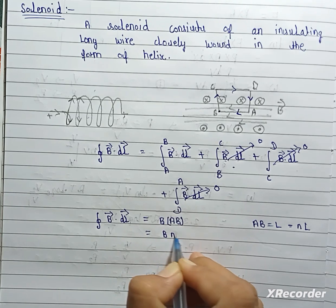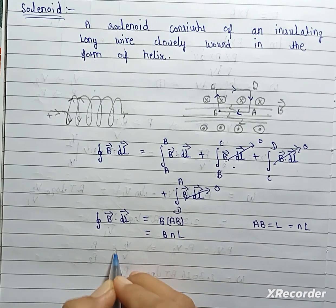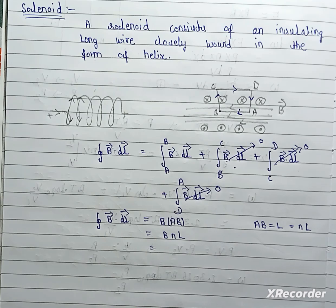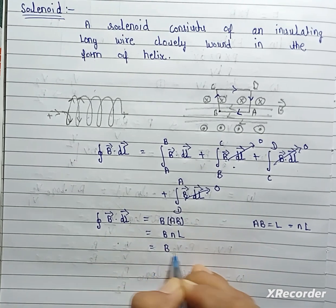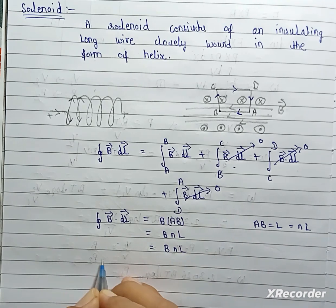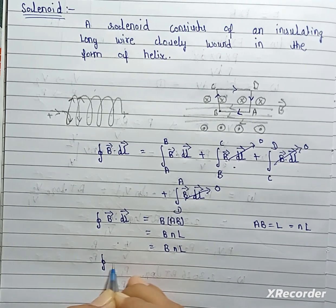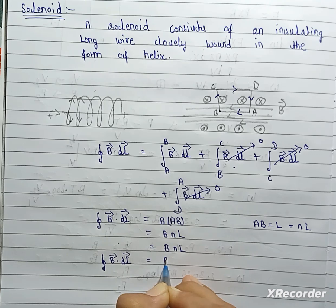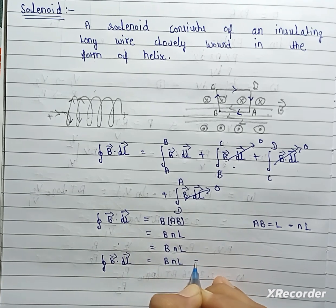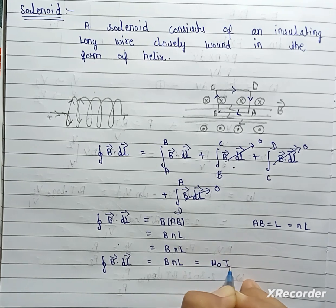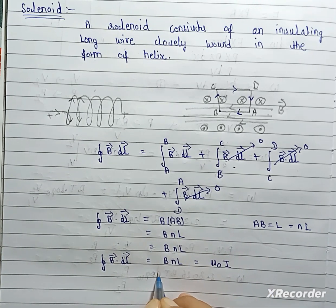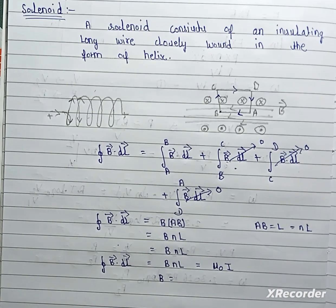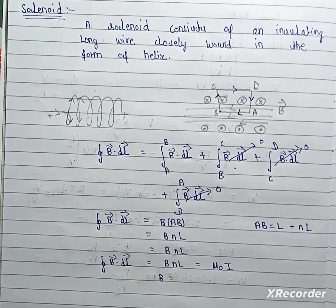So from here B equals, and according to ampere circuital loop B dot DL, this is equal to BnL and this is equal to mu not I.